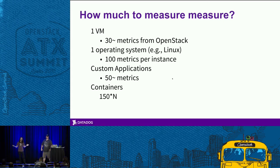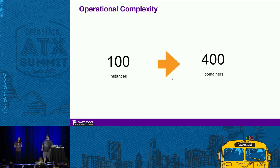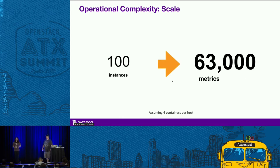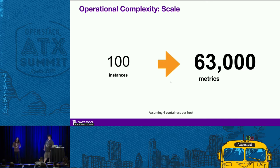How many folks are doing things with containers on top of OpenStack? You're now taking that 150 metrics and multiplying it by the number of containers you're running per node. Let's say you have 100 instances; we're seeing people run about four containers per instance on average, so that's about 400 containers. Take 180 metrics per host — the 150 custom metrics plus 30 from OpenStack — that's about 630 metrics a host, and 63,000 metrics total. You really want to collect those at second-to-sub-minute granularity. Five-minute or hourly averages, the RRD methodology from Cacti and MRTG, really don't work in a world where things are changing by the second.